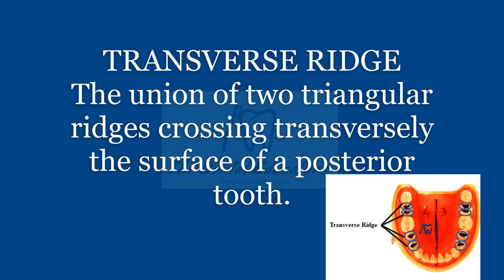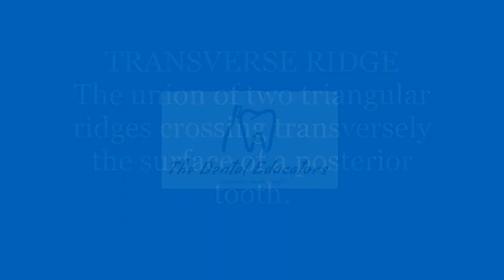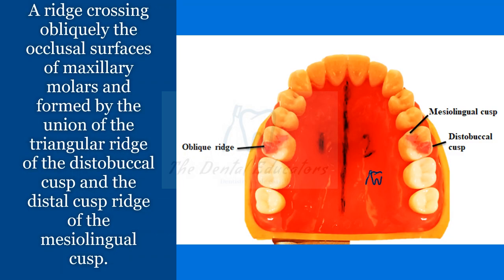The transverse ridge is formed by the union of two triangular ridges crossing transversely across the occlusal surface of a posterior tooth. When two triangular ridges join together, it is known as a transverse ridge.